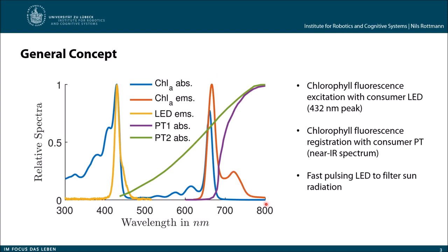In addition, we use a fast pulsing LED to avoid sunlight radiation. To filter and only see the chlorophyll emission from our pulsing LED, we can then simply use a bandpass filter.